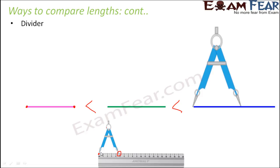So you saw three different options: observation, ruler, and divider. So out of these, you would feel that using a divider is a better approach because the chances of error is less here.